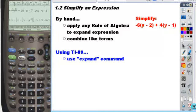To simplify an expression, all you're really doing is getting rid of any grouping symbols and just reorganizing your terms. The steps by hand are just to apply any of the rules of algebra that we've talked about, distributing using any of the properties.